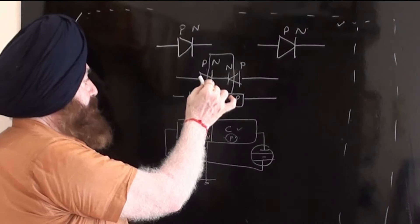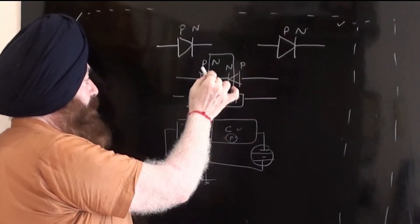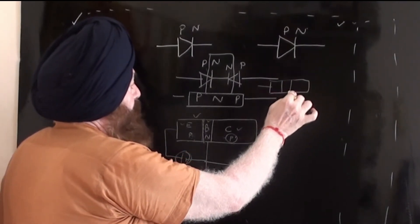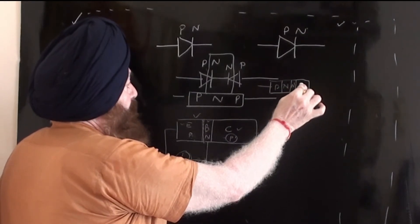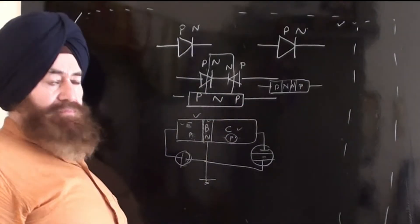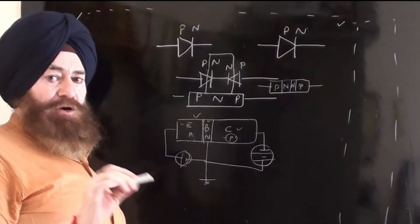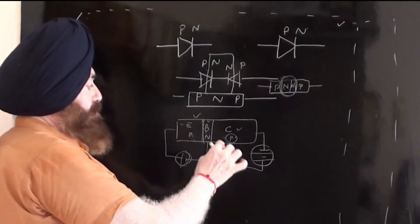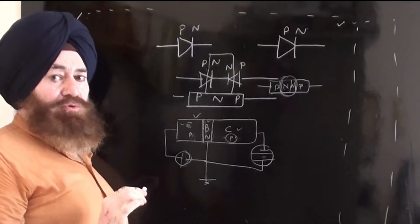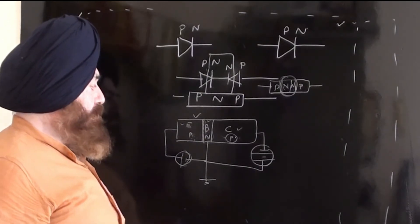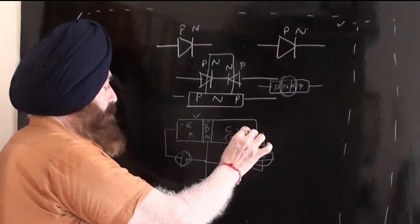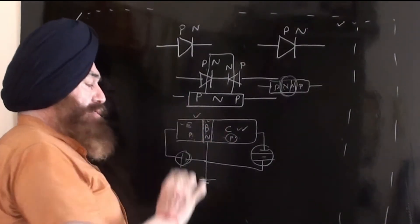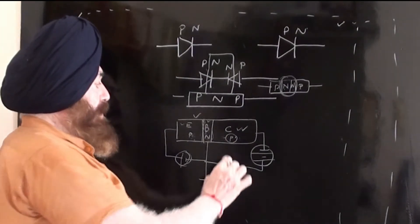But here you notice this is P, N, and P. There are four layers. Two diodes connecting back to back, there are four layers, one, two, three, four, and they are equally doped. Moreover, this region is quite wider. Base region is wider, but we want a very lightly doped base region.